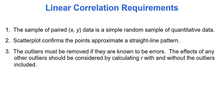Here are the requirements to perform the linear correlation test. The sample of paired data must be a simple random sample of quantitative data — meaning numeric data. The scatterplot must confirm the points approximate a straight line pattern. Outliers must be removed if they are known to be errors, and the effects of any other outliers should be considered by calculating r with and without them, because outliers could really mess up our calculations.